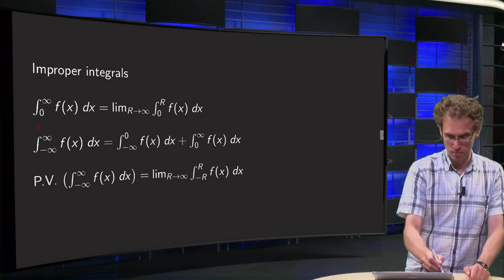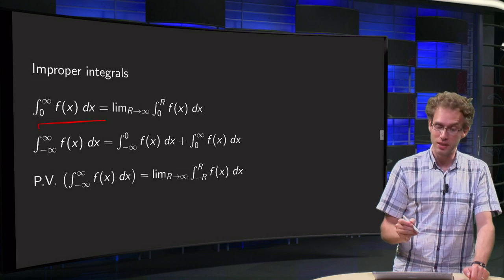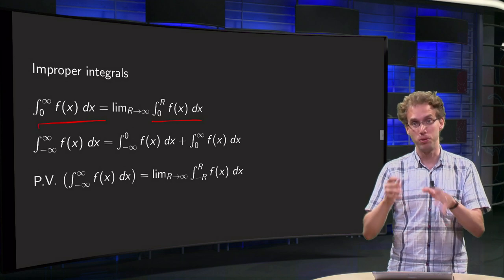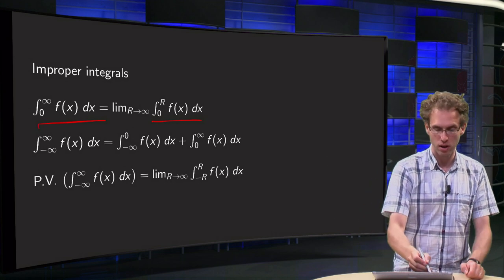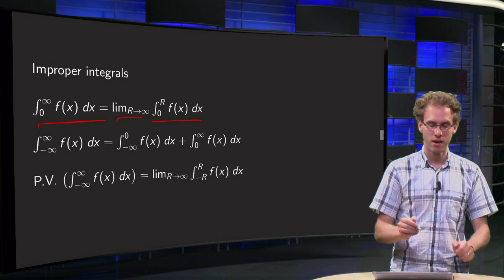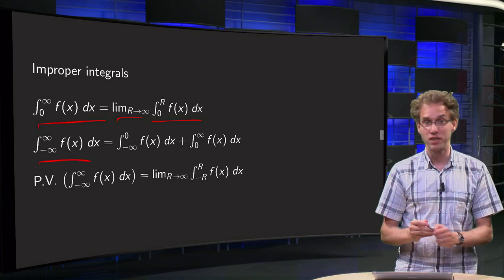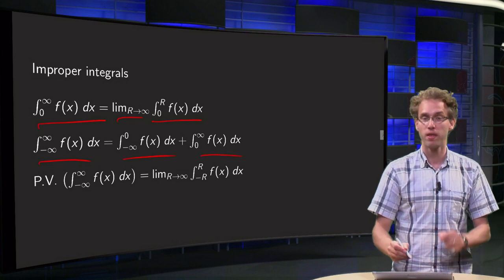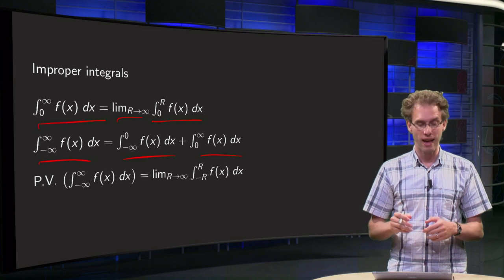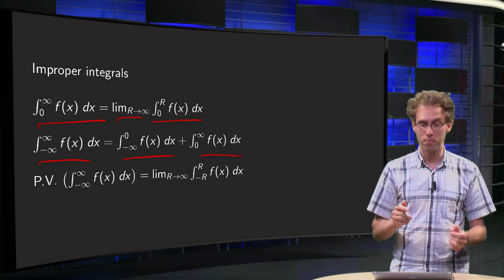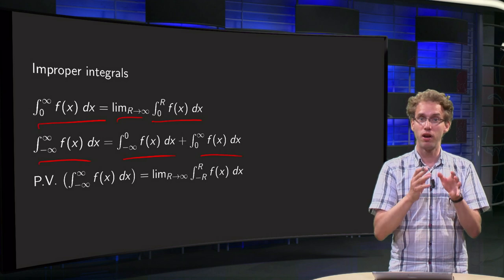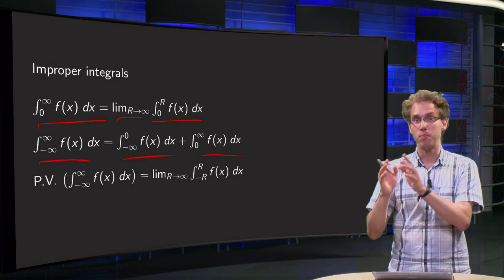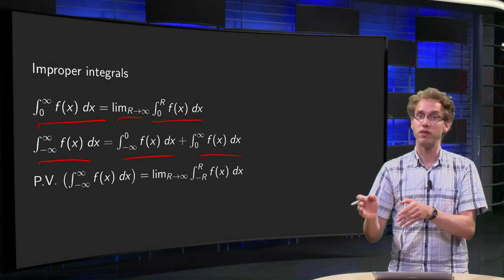What does the integral from 0 to infinity of f(x) dx mean? It means you take the integral from 0 to r first, compute that, and then take the limit as r goes to infinity. For the integral from minus infinity to infinity, you have to be careful: you split it up into minus infinity to 0 and from 0 to infinity, and then take both limits separately — the limit r₁ to minus infinity of the integral from r₁ to 0, and the limit r₂ to infinity of the integral from 0 to r₂.